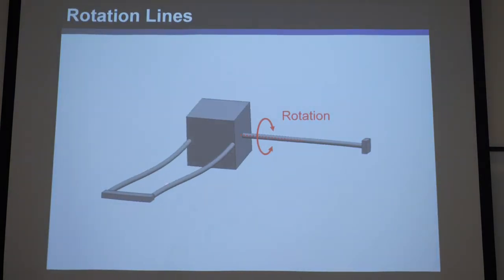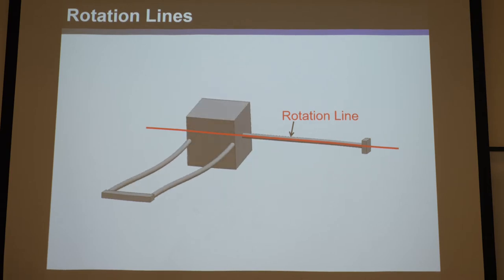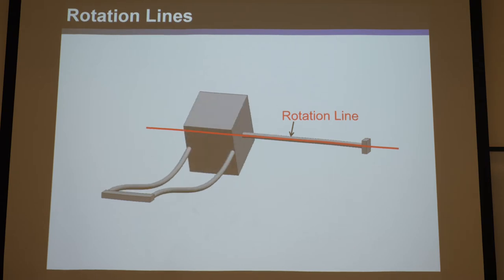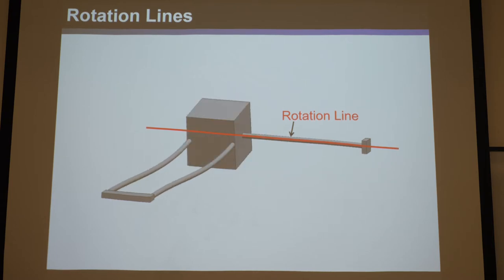Consider this flexure here. You can see it's grounded on this end, grounded here, and it's rotating around this axis that I draw as a red line — a rotation line. Remember from lecture two: twists with pitches of zero are drawn as red lines and they're pure rotations. That's exactly what we're talking about here. This is a twist with a pitch of zero, and you can see how that corresponds to everything moving — that's the twist corresponding to this rigid body.